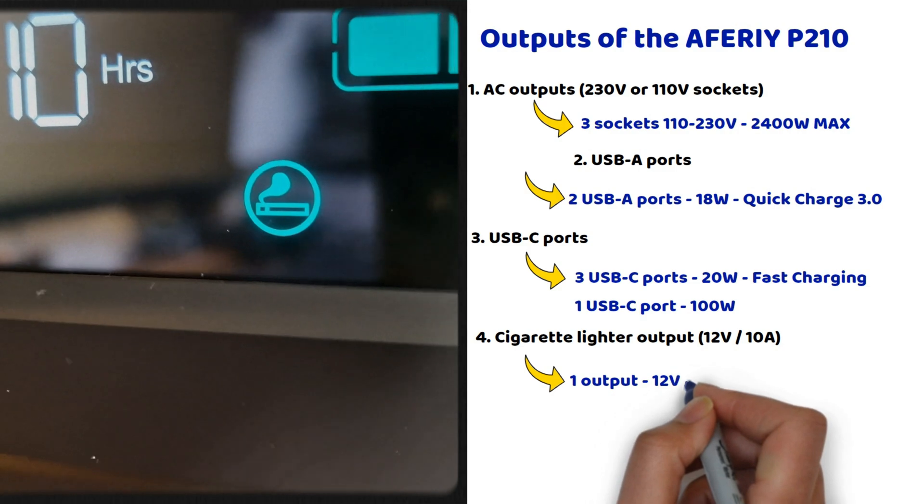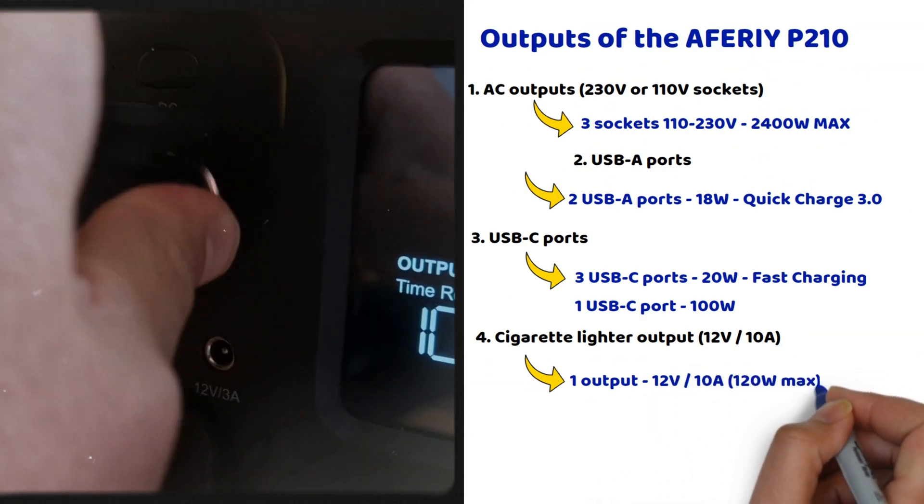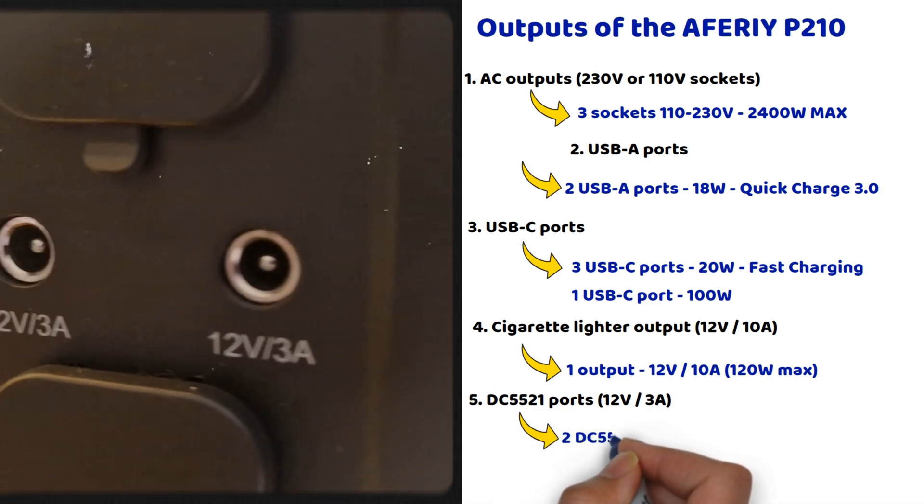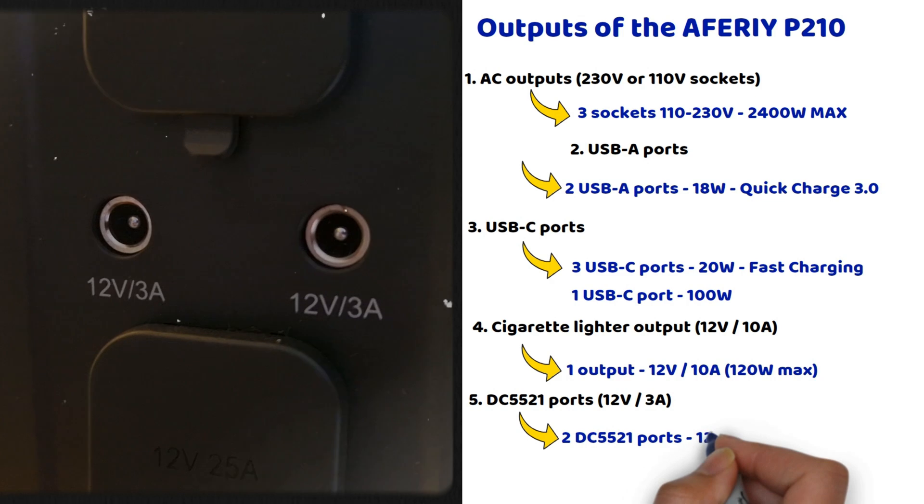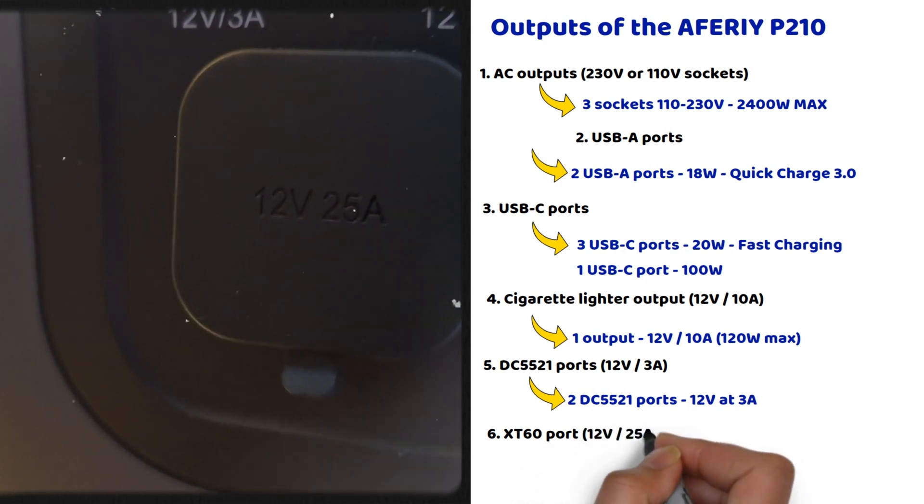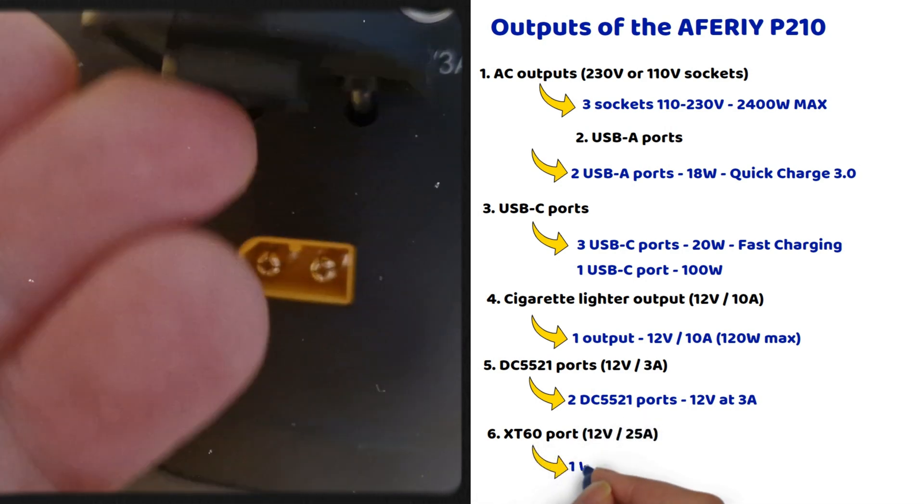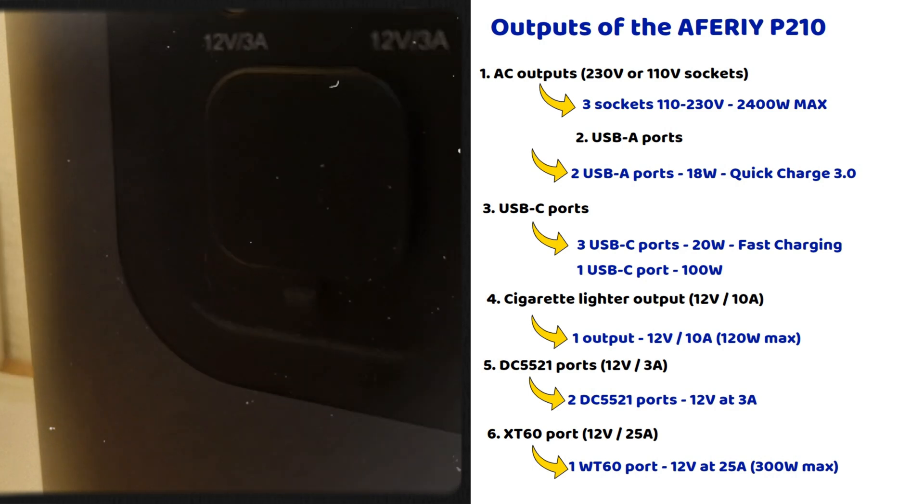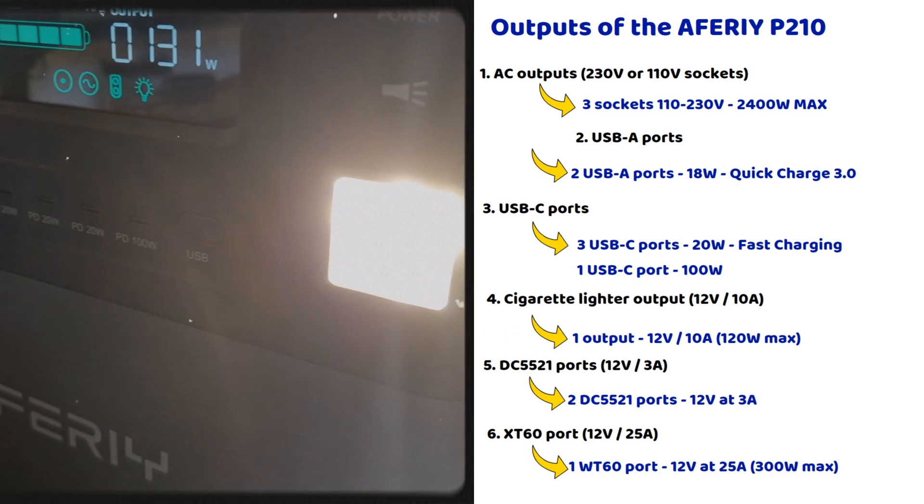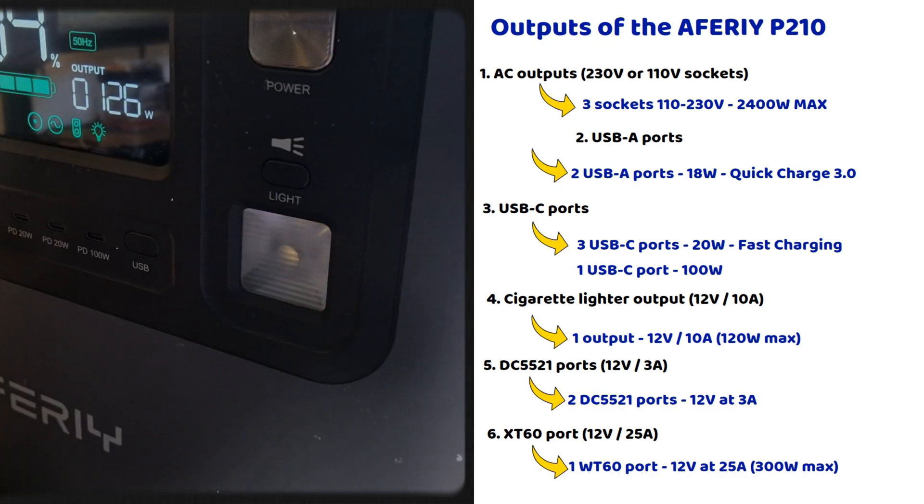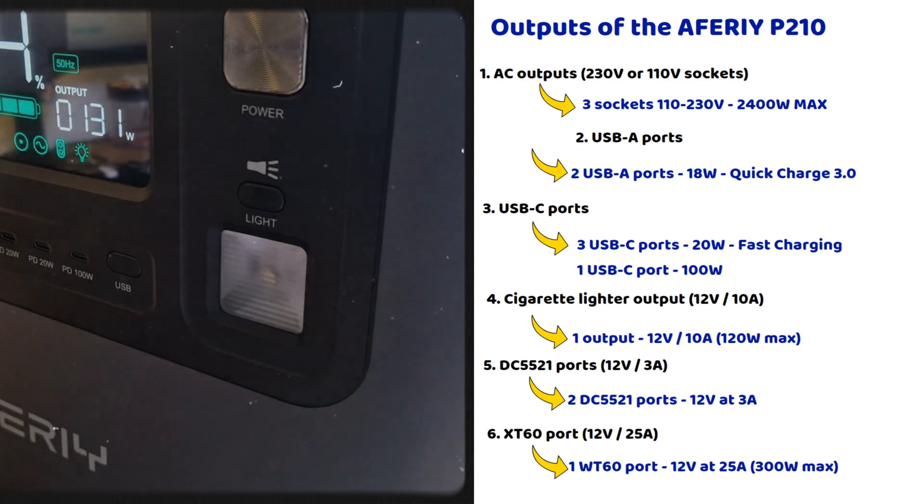The station also includes a cigarette lighter outlet providing 12 volts at 10 amps, 120 watts max, ideal for powering devices like compression coolers, air compressors, or other devices using a cigarette lighter adapter. There are two DC5521 ports, offering 12 volts at 3 amps, suitable for low-power devices like LED lights, fans, or equipment that operates on direct current. An XT60 port provides 12 volts at 25 amps, 300 watts max, commonly used for powering specific devices such as drones or certain modeling equipment. Lastly, this portable station is equipped with an integrated LED light with three modes: constant light, flashing, and SOS. This is a handy feature for emergencies or for lighting the area around your camper van or a campfire.